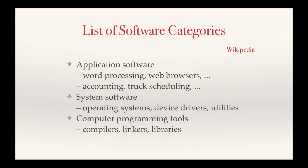Here's a list of software categories from Wikipedia. As you can see, it's divided into application software, system software, and computer programming tools. That third category — computer programming tools — should be reminiscent of Pressman's dual role for software: first as a product, and second as a vehicle for delivering a product.